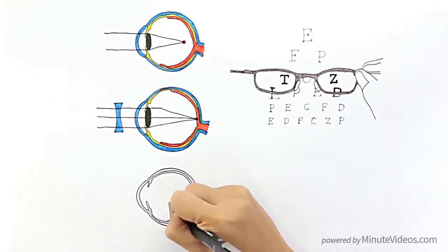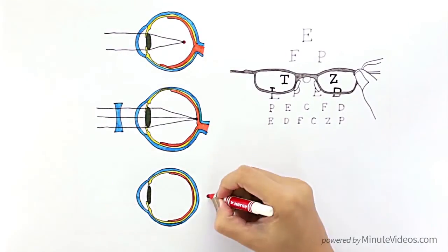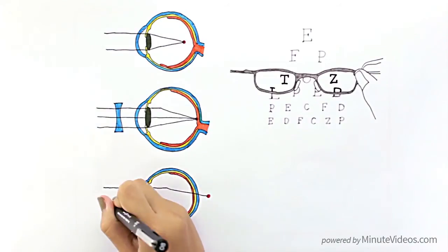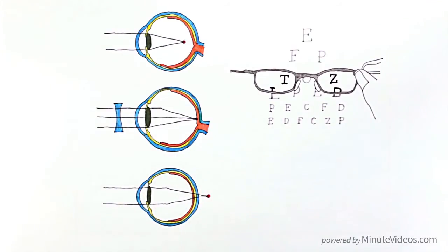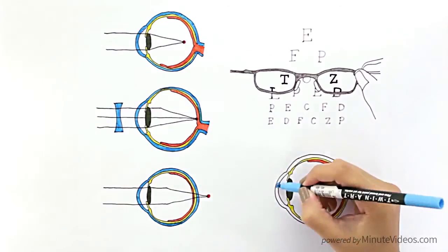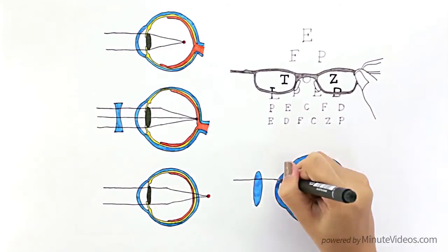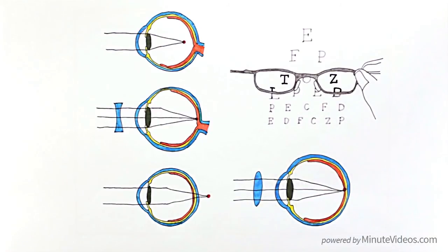A far-sighted person does not see that well because the light rays don't cross before they hit the posterior wall with the retina, but we can just as easily correct this problem by wearing glasses with a convex lens.